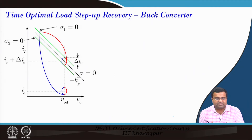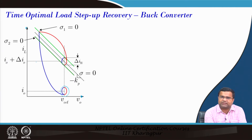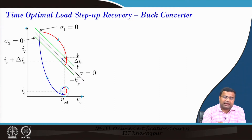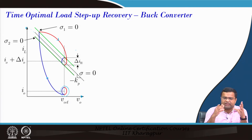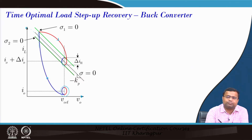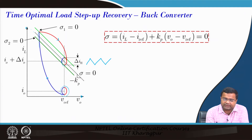Looking at the buck converter phase plane — output voltage on the x-axis and inductor current on the y-axis — initially it was running under one load condition I0. Now I0 has changed to I0 plus delta-I0. The blue line is the on-state trajectory and the red one is the off-state trajectory. We have now introduced a hysteresis band of delta-Ih so that the current ripple and half-band are more or less the same. Once it hits the upper limit it turns off; when it hits the lower limit it turns on, retaining the periodic behavior.